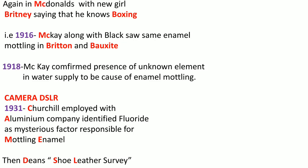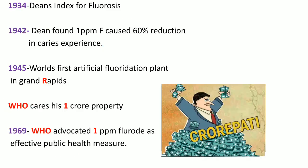ST Dean conducted the shoe leather survey along with other works. In 1934, Dean had his own classification named Dean's Index for fluorosis. And in 1942, ST Dean found that one ppm of fluoride caused a 60 percent reduction in caries experience. So we had DSLR: DSL for Dean's Shoe Leather, and R for Grand Rapids.